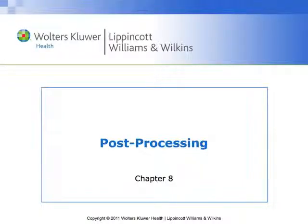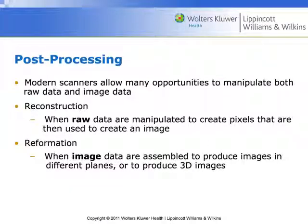This chapter is on post-processing, and specifically we're going to be defining some terms related to reformatting and retrospective reconstruction, as well as talking about different forms of reformats like MPRs, as well as both the limitations and the benefits of these different kinds of ways of orienting the picture. Broadly, post-processing impacts two things: reconstruction and reformatting. Reconstruction is any time that raw data is used to create an image, and a reformat is when an image is reassembled to produce images in a different plane or to produce 3D images.